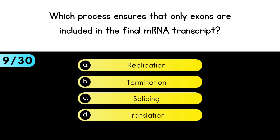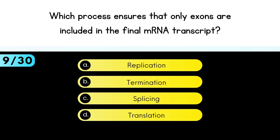Which process ensures that only exons are included in the final messenger RNA transcript? During splicing, exons are kept and introns are cut out and removed.